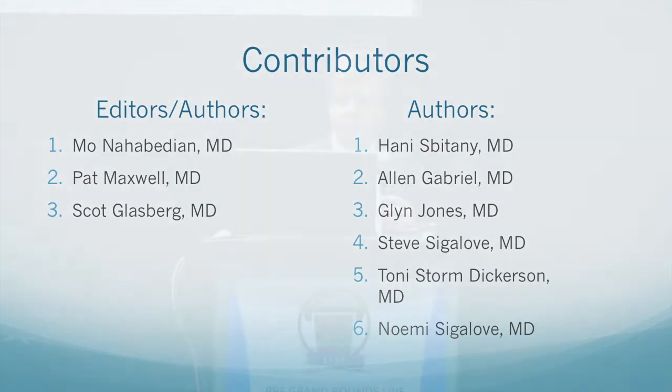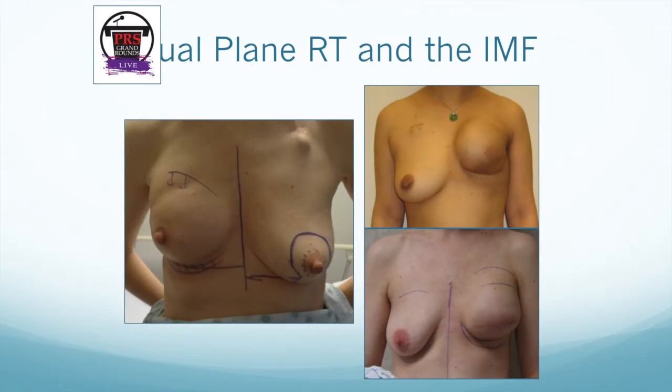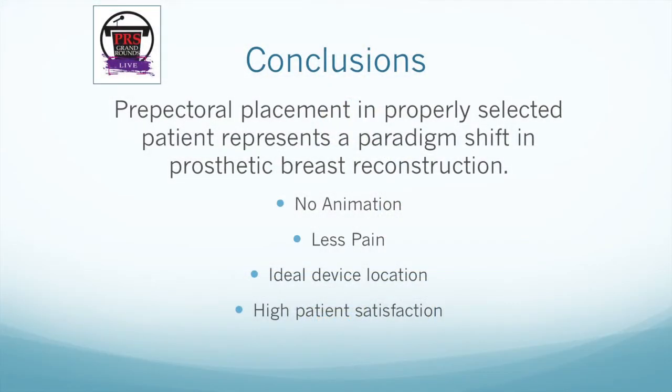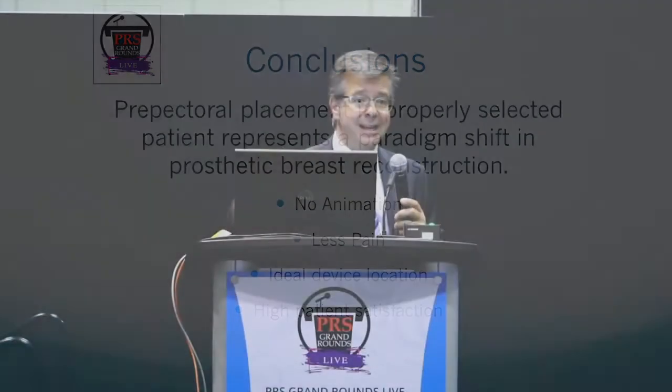With classic dual plane reconstruction and radiation, you get that classic elevation of the inframammary fold — because of the muscle activity pulling it up. But with radiation and pre-pectoral, that inframammary fold doesn't change. You can still get tightening and skin changes, but you don't get that same degree of upper pole distortion. Pre-pectoral is going to be a paradigm shift: no animation, less pain, ideal device location, and patients love it. It's a patient-driven phenomenon.